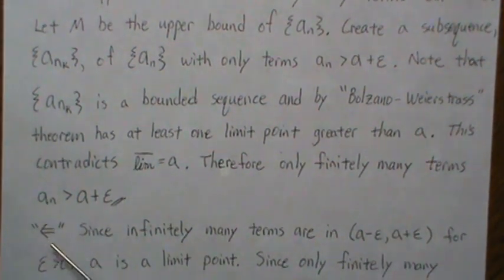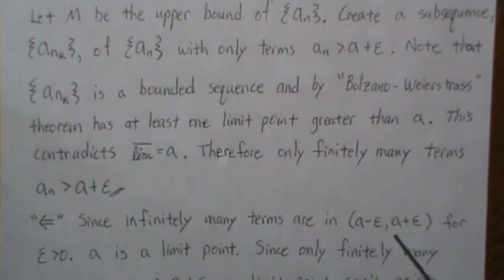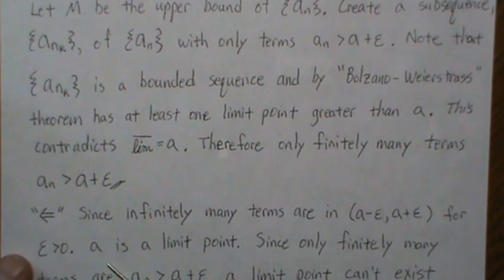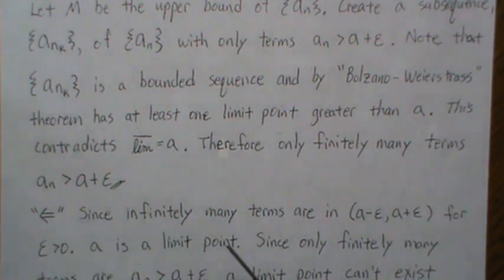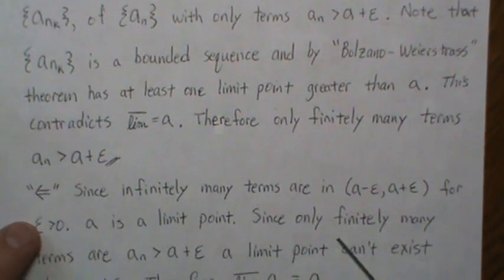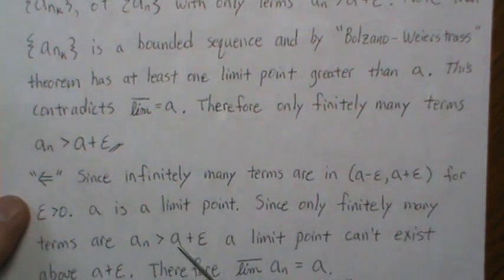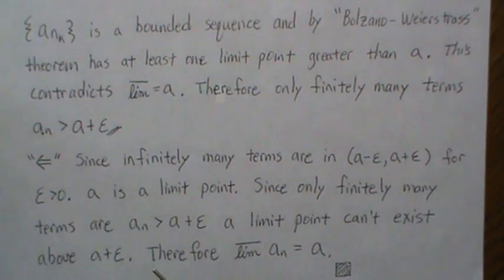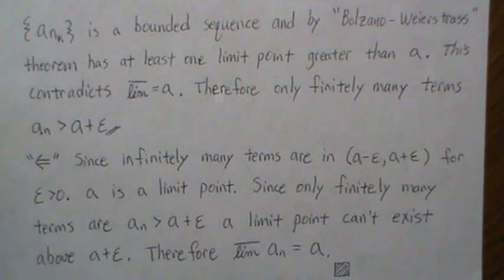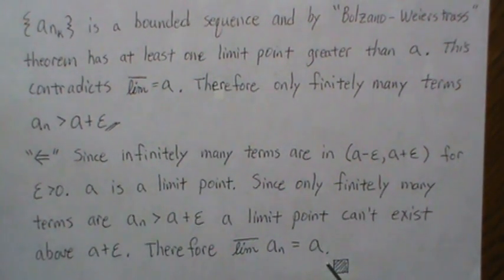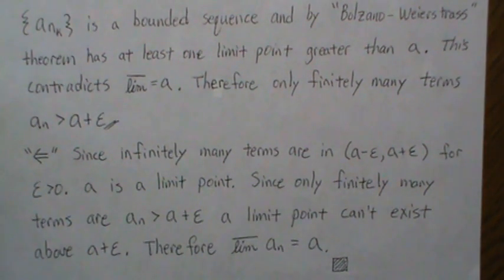Going the other direction: we assume that for any epsilon greater than zero there are infinitely many terms in the interval (a minus epsilon, a plus epsilon), and we need to show that a is a limit point — which follows directly from the definition. Since only finitely many terms are above a plus epsilon, no limit point can exist above a, meaning a is our least upper bound, i.e., the limit supremum of our limit points. The theorem is proved.